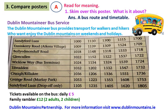Children, now look at the question. Question number one: Skim over this poster. What is it about? The answer is: a bus route and a timetable. The question is written on the top of the slide — skim over this poster, what is it about? Answer: a bus route and timetable.